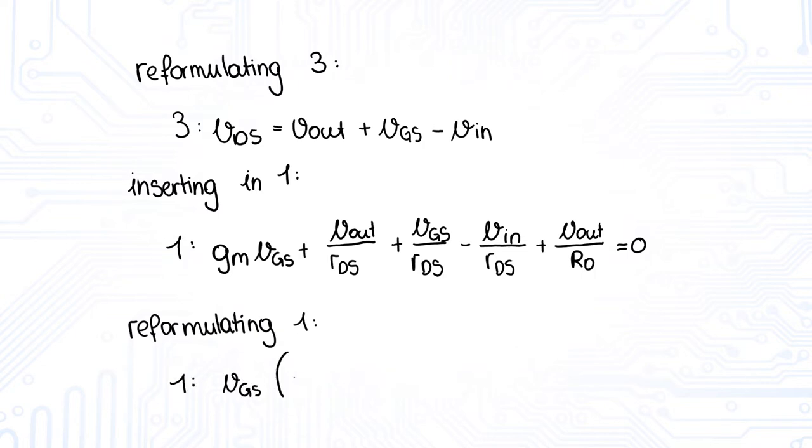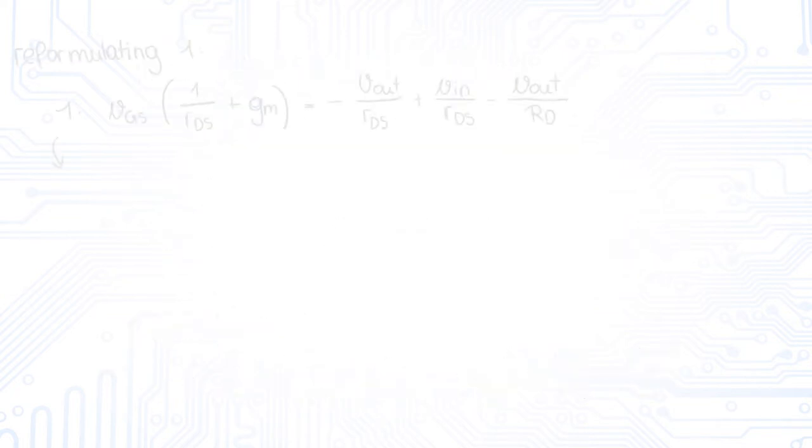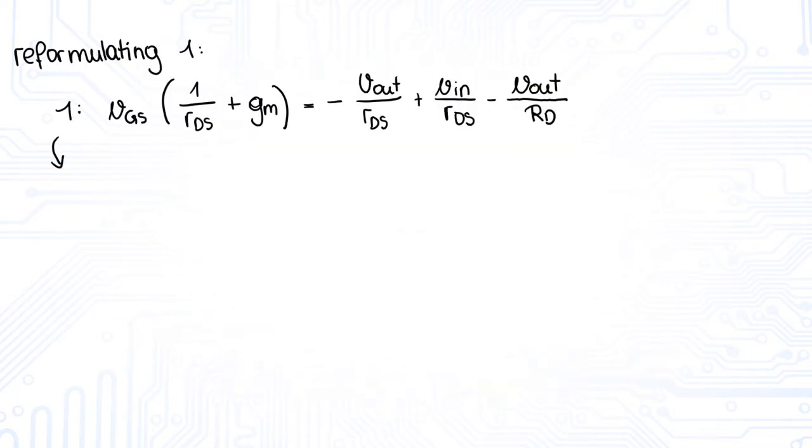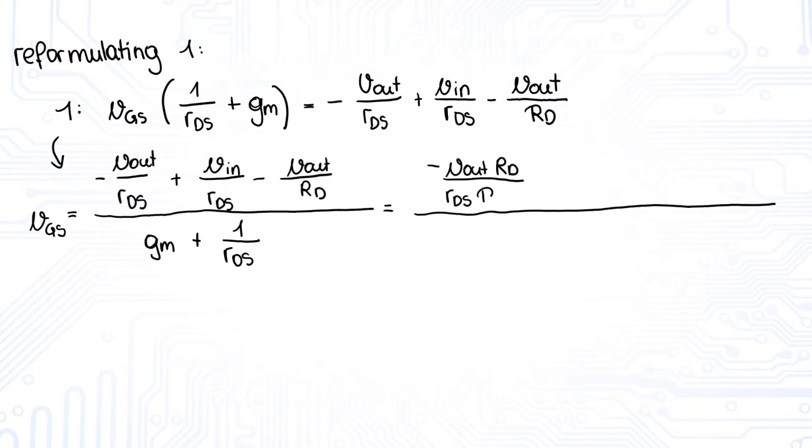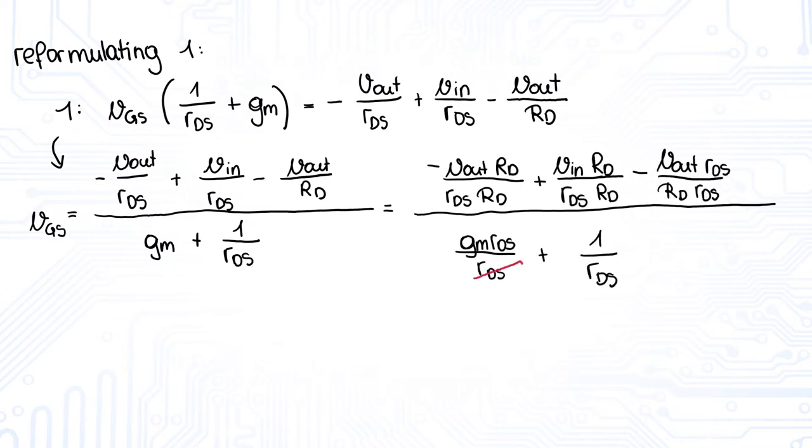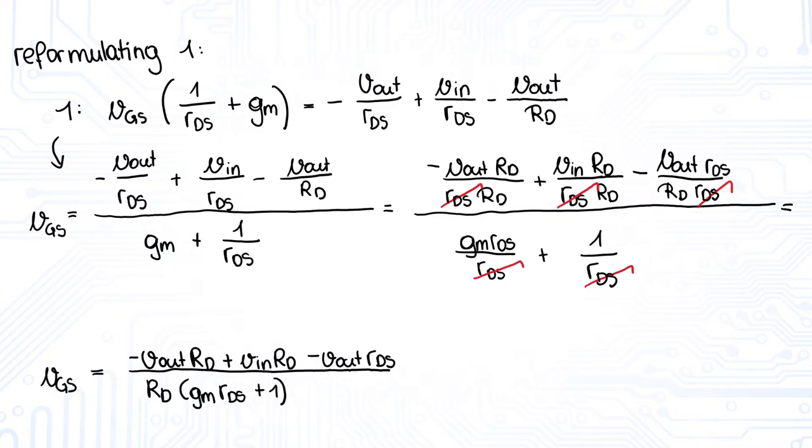As you can see, the resulting equations are getting longer but mathematically not more complex. As we have double fractions, we bring the numerator and denominator to the same common denominator. And happily, we can shorten the fraction and get VGS is minus Vout times RD plus VIN times RD minus Vout times RDS divided by RD times GM times RDS plus 1.